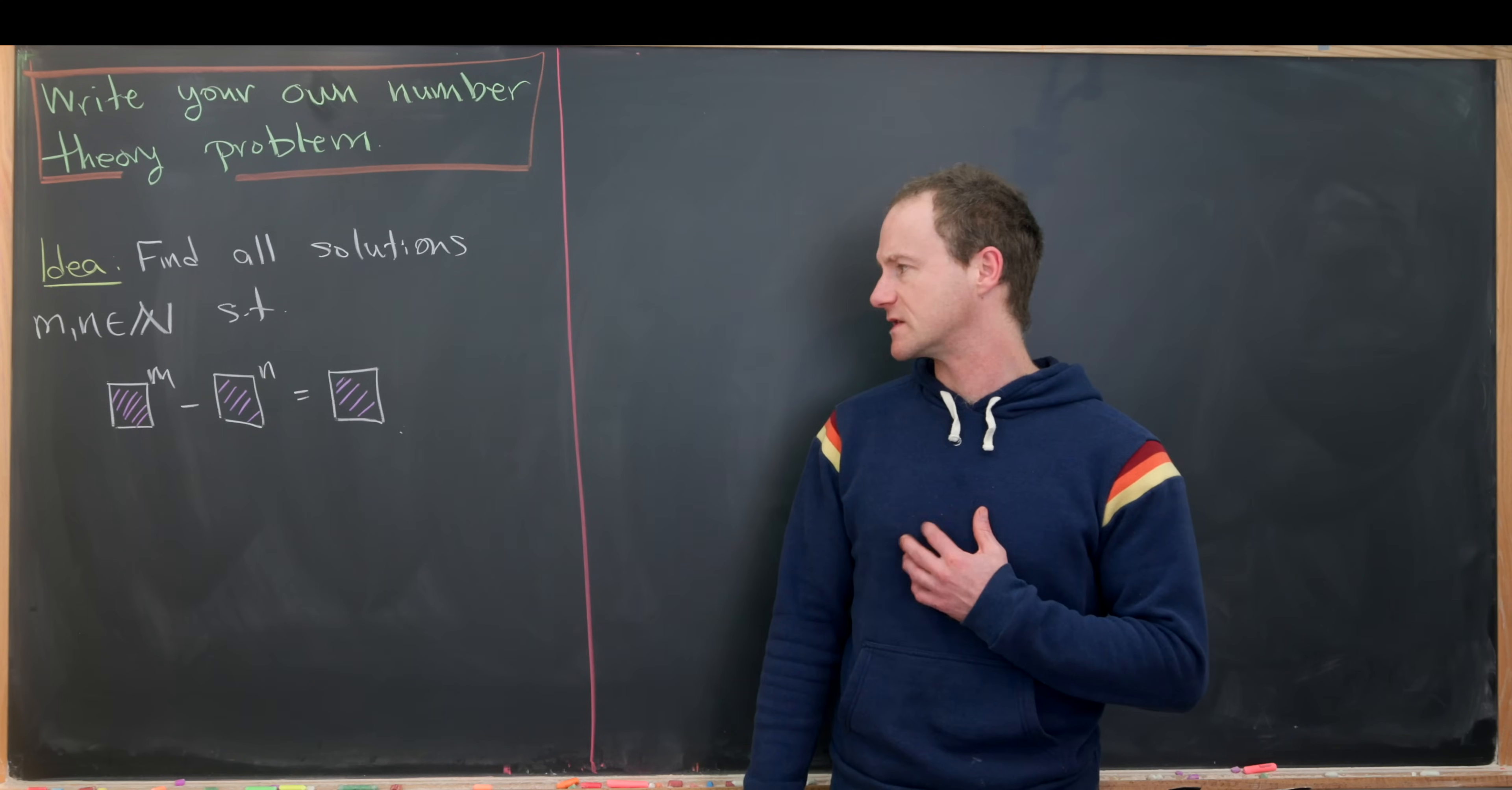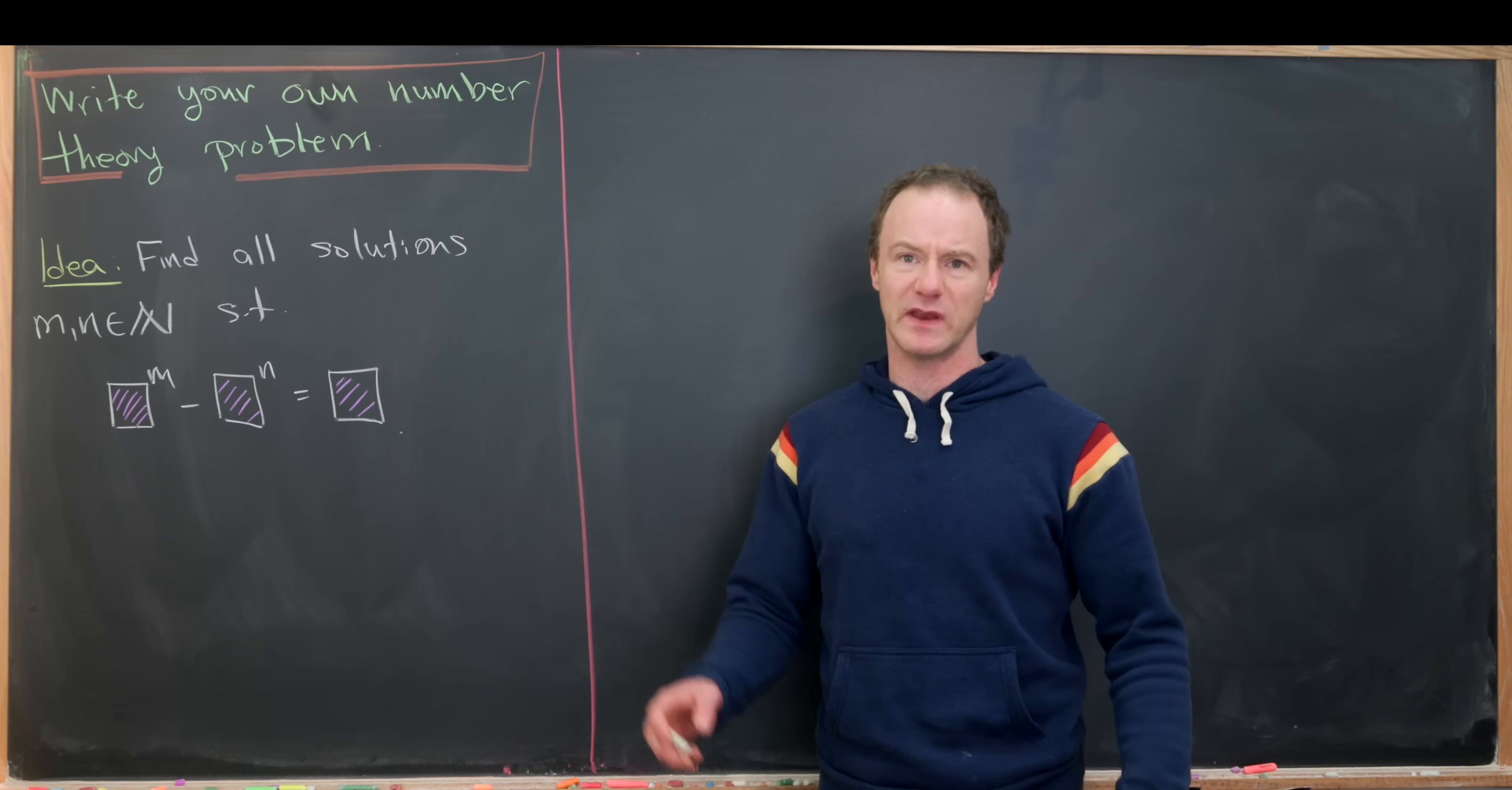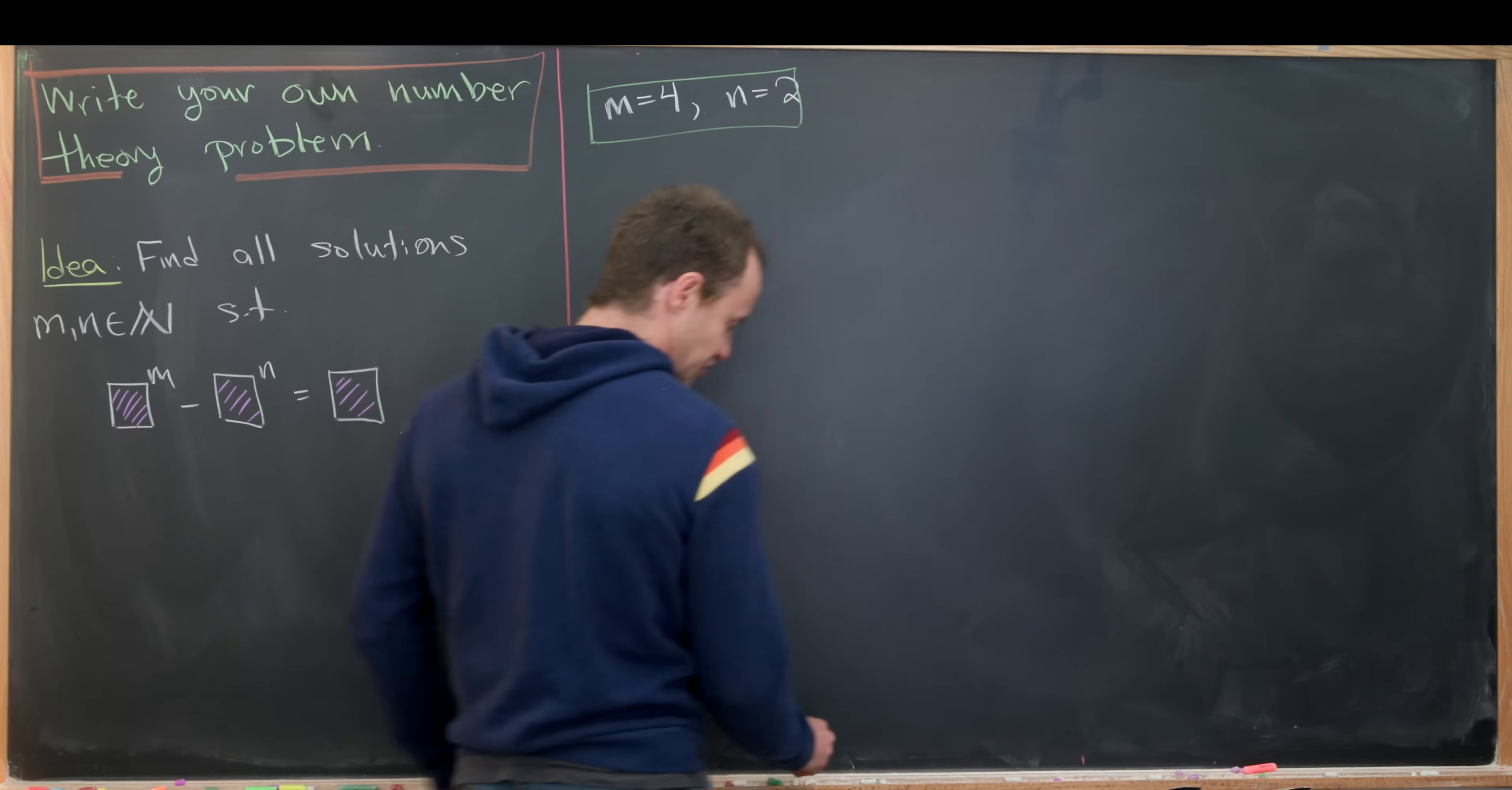How might we work with this? I think maybe our best bet is to plug in some sort of polynomial here, as well as a polynomial here and see what simplification happens. Also choose the m and n that we'd like for the final solution. Let's say we want our final solution to be m equals 4 and n equals 2, although of course you could choose pretty much anything.